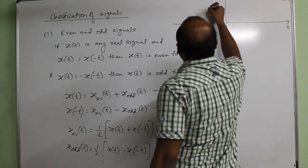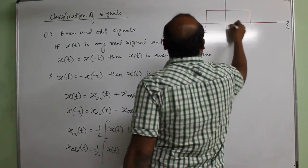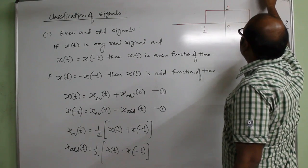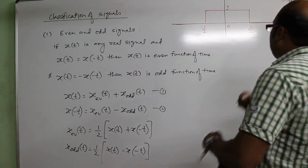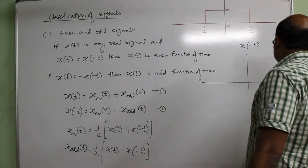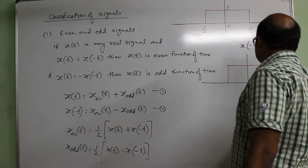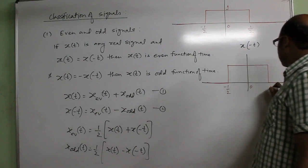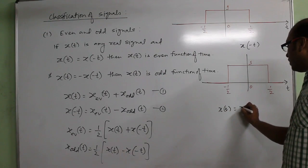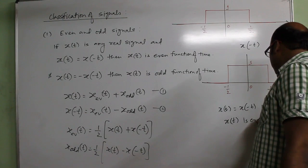Let us take a rectangular pulse with width 1 and height 1. This x(t) is basically centered at t equals 0. If we fold the signal it remains unchanged. For this x(t), x(-t) is the same. So here x(t) equals x(-t), hence x(t) is an even signal.